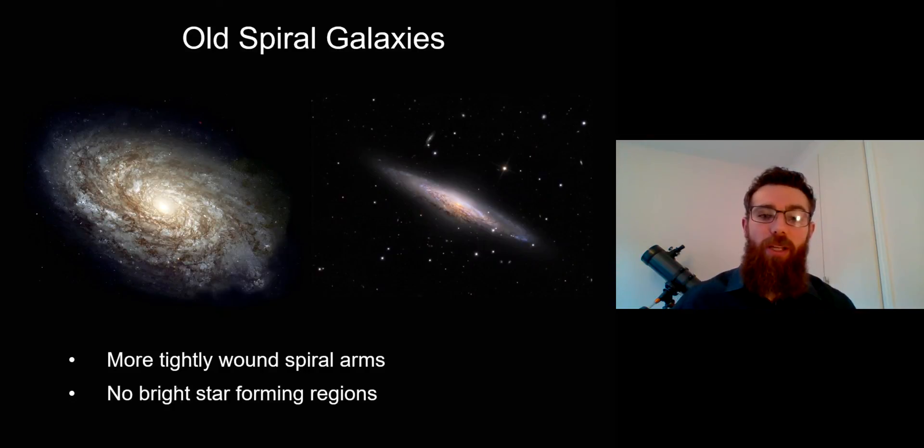And then your older spiral galaxies. You'll find that the spiral arms are more tightly wound and they don't have those bright regions where you can actively see the star formation. Their gas is starting to run out. So they have very little gas content, very little star formation, but they still have a little bit probably, but just not a lot. You can see you can't see any bright regions there where you might see some actual star formation.